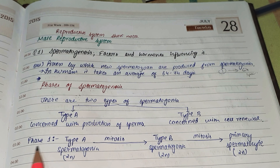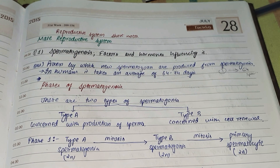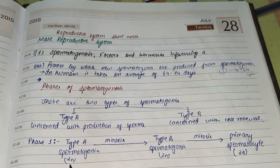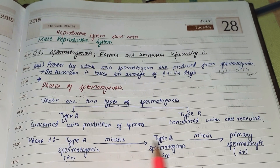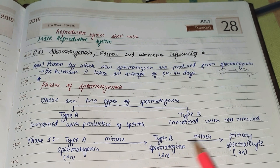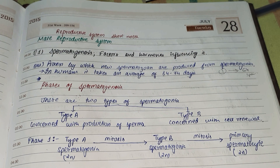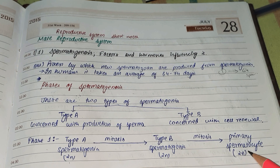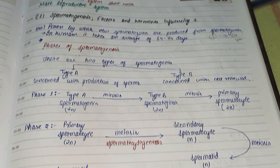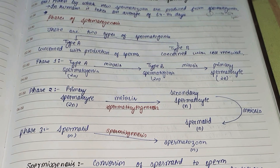There are three phases of spermatogenesis. Phase one: Type A spermatogonia, which are diploid, undergo mitosis to produce Type B spermatogonia. These Type B spermatogonia then undergo further mitosis to produce primary spermatocytes. Remember that the primary spermatocyte is diploid.